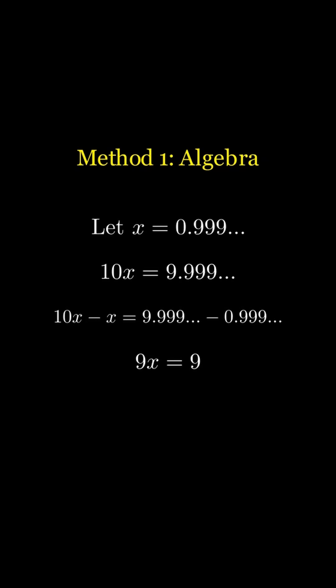We get 9x equals 9, divide both sides by 9, we get x equals 1, so 1 equals 0.99 repeating.